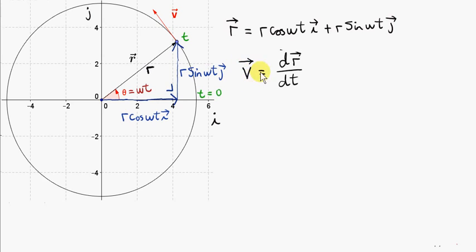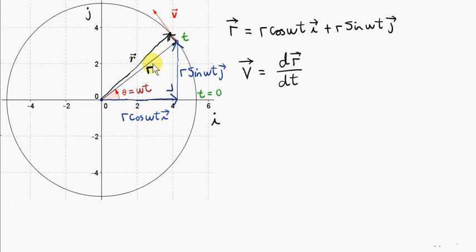We can get the velocity vector v by differentiating the position vector r with respect to time. I will try to give a rough intuition for why that's true. We know that velocity is change in position divided by the time taken for that change to occur. If we imagine this particle moves a very tiny distance, the new position vector changes slightly. This is very like what you saw for the derivation of centripetal acceleration using a geometrical approach, but here we're talking about the change in the position vector. You can see that this change is tangential to the circle.